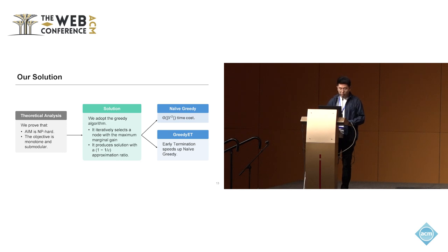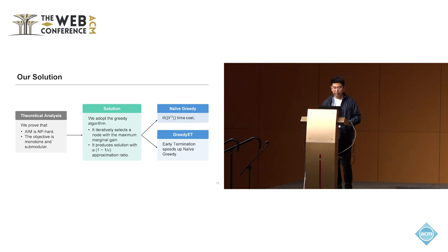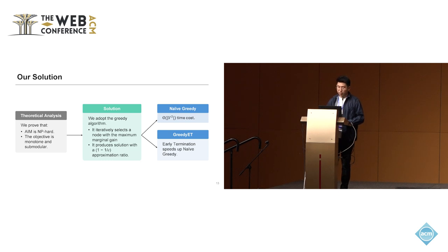For our theoretical analysis, we have proven that the AIM problem is NP-hard and the objective is monotone and submodular. We adopt a greedy algorithm that iteratively selects nodes with the maximum marginal gain of scores, producing solutions with an approximation guarantee. We propose two greedy methods: a naive greedy with O(V²) time complexity, and a more advanced greedy with early termination (Greedy-ET), which significantly speeds up the naive greedy method.